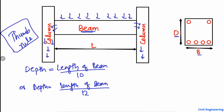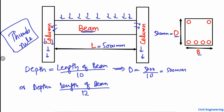For example, let D be the depth of the beam and W be the width. If the length of the beam — that is, the distance between the two columns — is 5000 millimeters, we put it into the formula: depth equals 5000 divided by 10, which gives us 500 millimeters. So the depth you should provide for your beam is 500 millimeters. It is a thumb rule, not a fixed value, but you can start your beam design with this value.